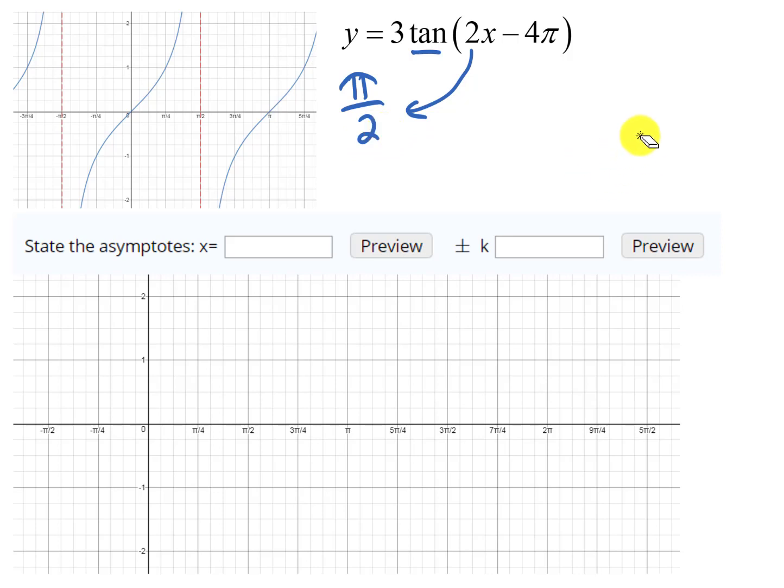Then the next thing it asks for are the asymptotes, and I just pasted an example here so you can see where the blanks were and how you fill it in. So we need to find the asymptotes. Normally for tangent, this is the graph of tangent of x here, and the asymptotes are π over 2 and negative π over 2 for a basic tangent graph. The tangent has its intercept halfway between those asymptotes, and the asymptotes are the period, or π, apart from each other.